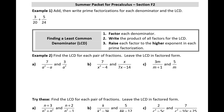A quick review of adding and subtracting fractions: 3/20ths plus 5/24ths. It might help to find an LCD if I factor those denominators. So I'm going to factor 20 into 2 squared times 5 — that's the prime factorization. And then I'm going to factor 24 into 2 cubed times 3.